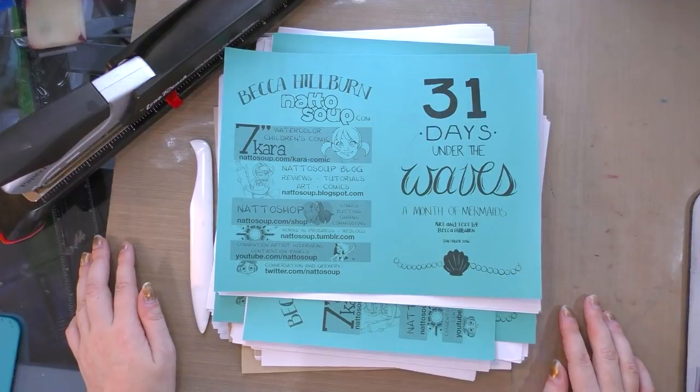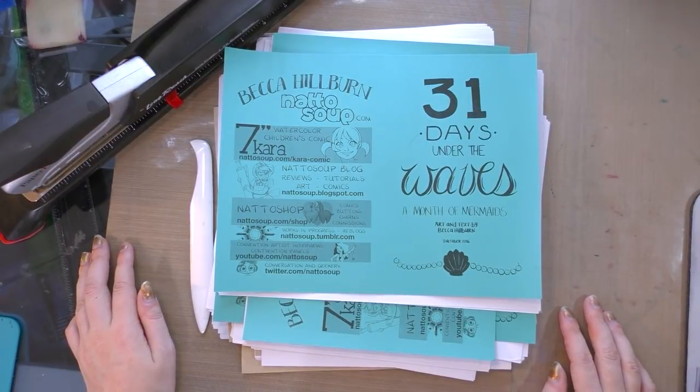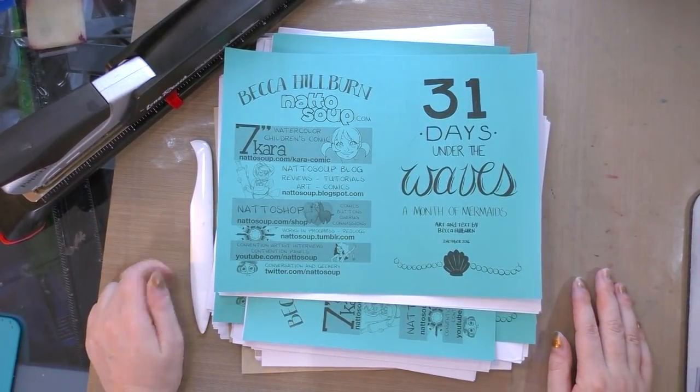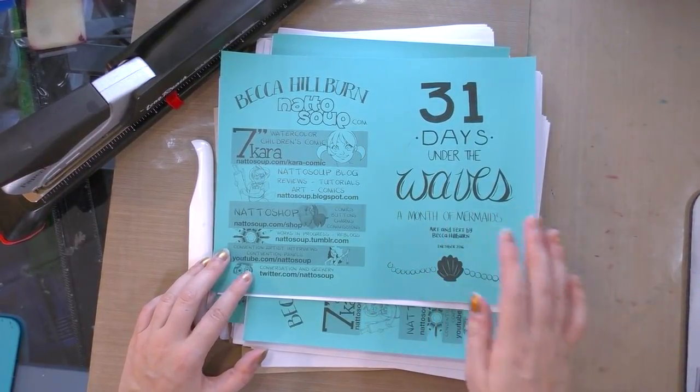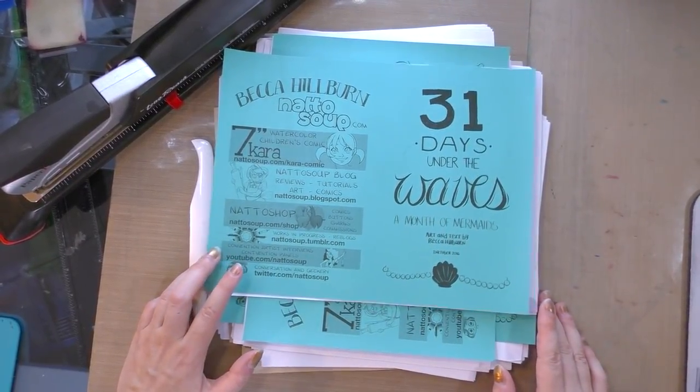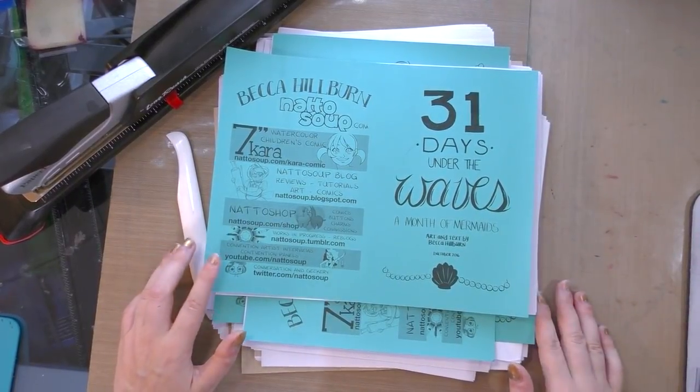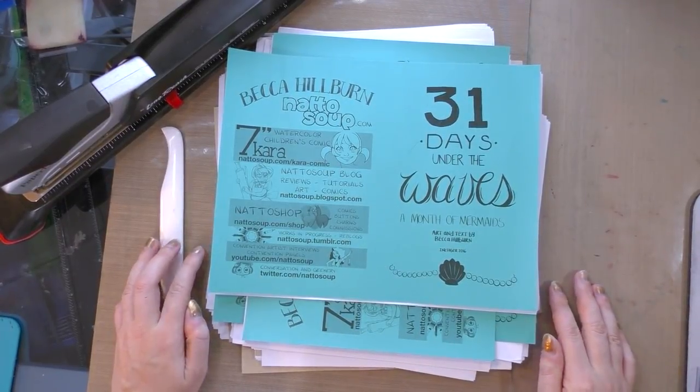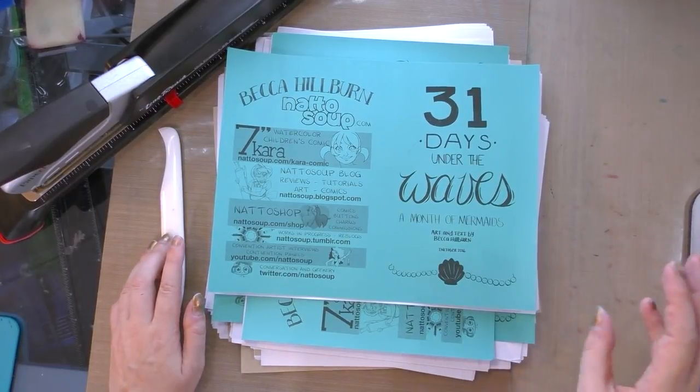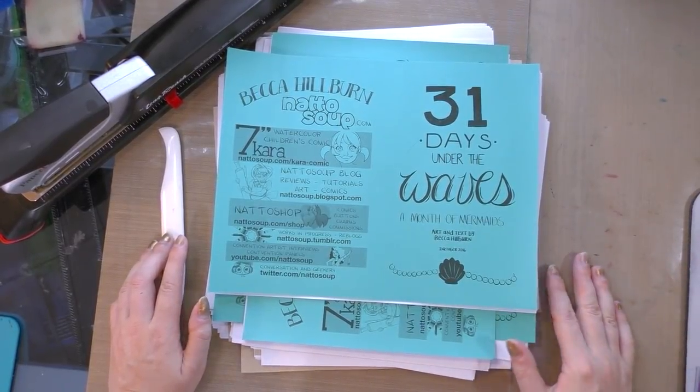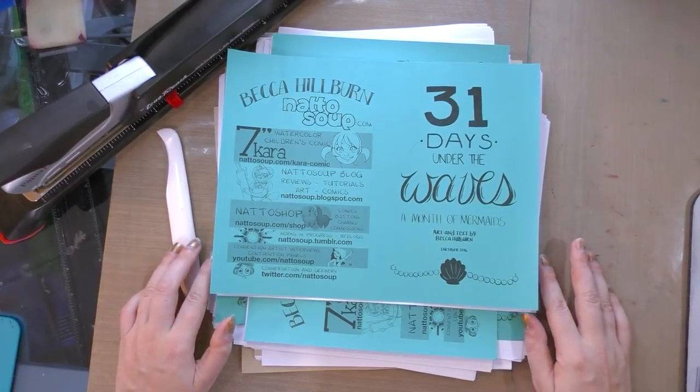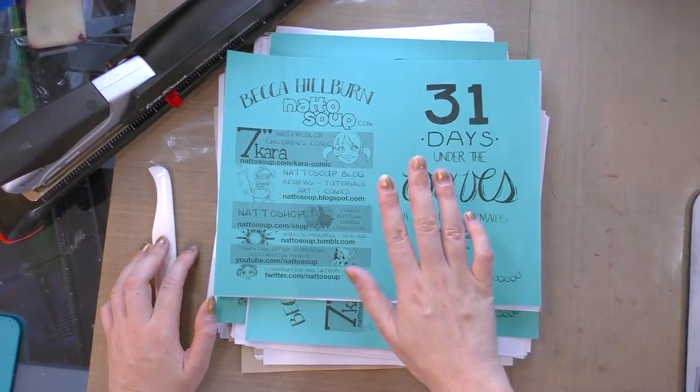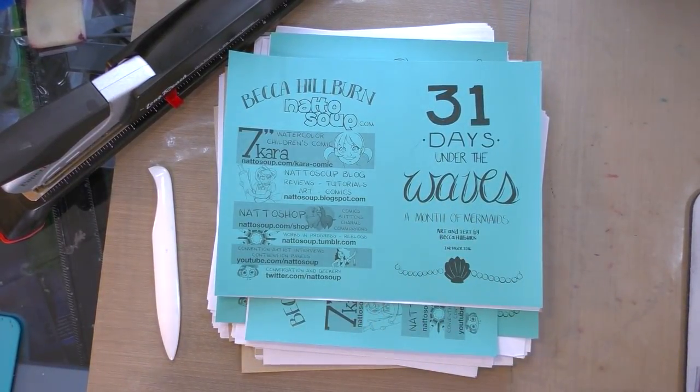I have at least two other videos in the zine making series, including one where I make a micro mini, one sheet of paper, eight pages of comics, another where I flip through my huge mini comic and zine collection and talk about content and bindings, and then a third where we talk about assembly. This is going to be another assembly video. I hope it is helpful, useful, and inspiring, and I will keep nagging my partner to do that InDesign walkthrough. So let's go ahead and get started.